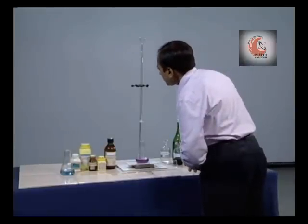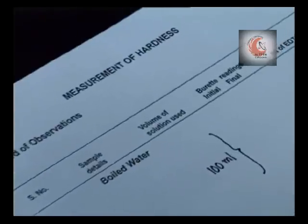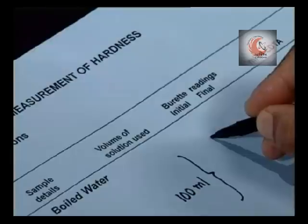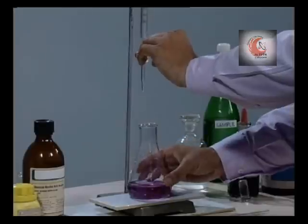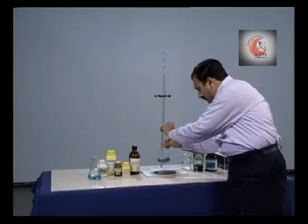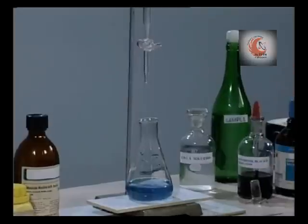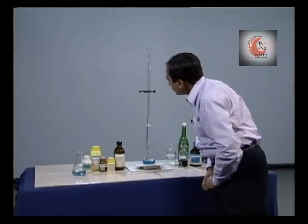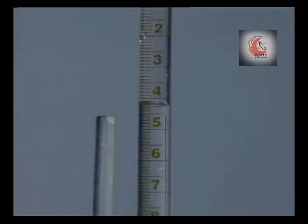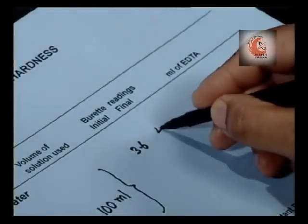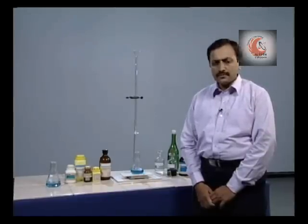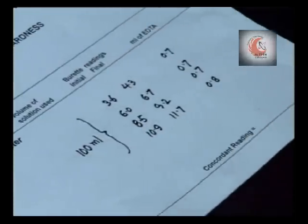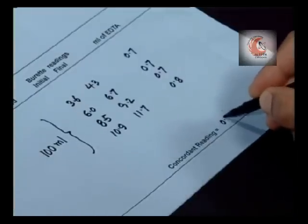Note down the initial reading. Titrate the sample till the blue colour appears. Note down the final reading and find the volume of EDTA used. Repeat the process till we get concordant values. The concordant reading is 0.7 ml.